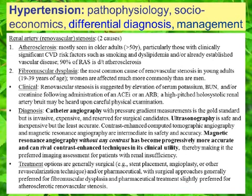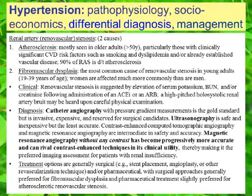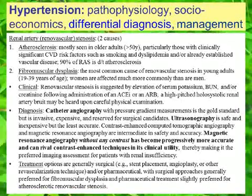Ninety percent of renal artery stenosis is caused by atherosclerosis. Fibromuscular dysplasia is a cause of renal artery stenosis especially in younger populations under age 40, and women are affected much more commonly than men.